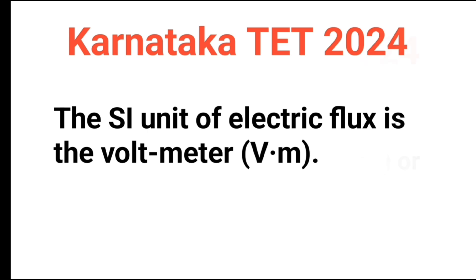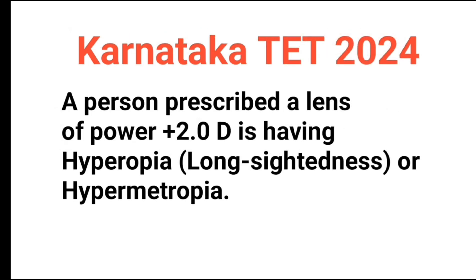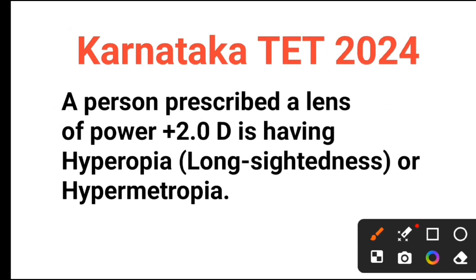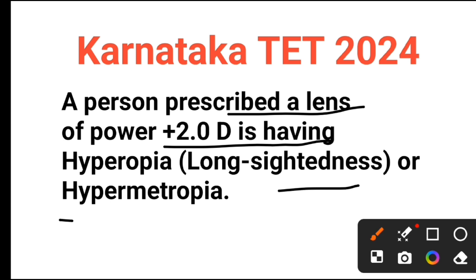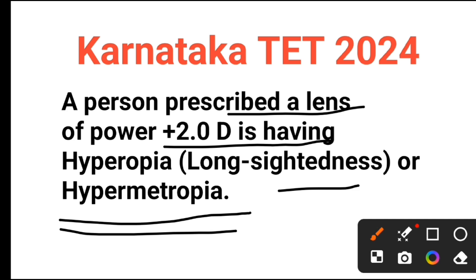A person prescribed a lens of power 2.0 D is having hypermetropia. The correct answer is hypermetropia.